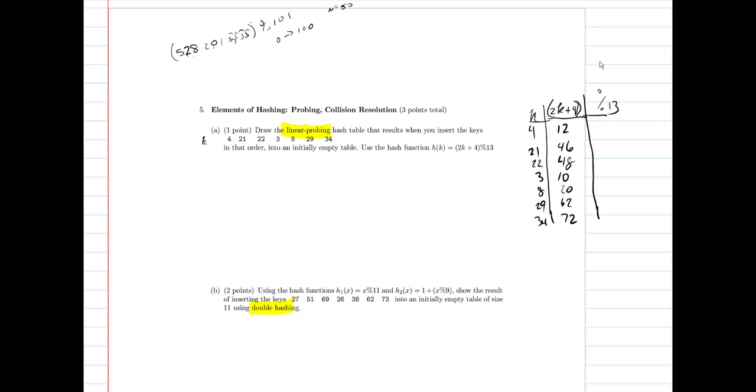Now the mod 13. 12 mod 13 is just simply 12. 46 mod 13. 13 goes into 46, 3 times with a remainder. 46 divided by 13 is 3 with the remainder of 7 actually, because 13 times 3 is 39 plus 7.